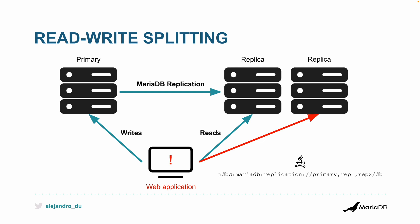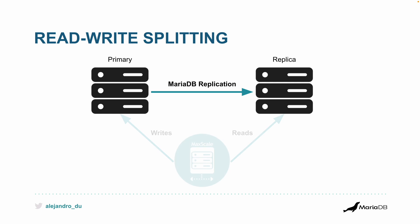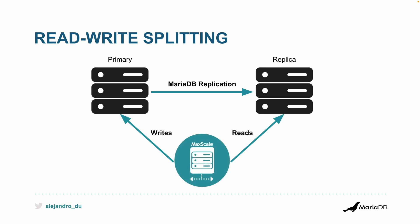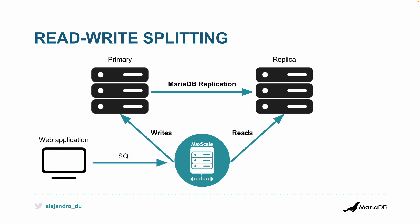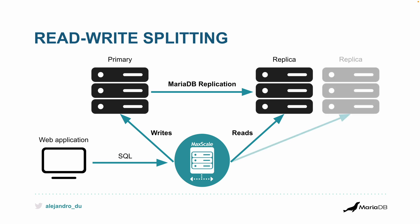However, if you want to add one more replica you have to modify that string, which may require a restart of the application — so that's downtime. If you replace that with a database proxy that automatically does read-write splitting for you, you configure things there and connect the web application to just one endpoint: the database proxy.